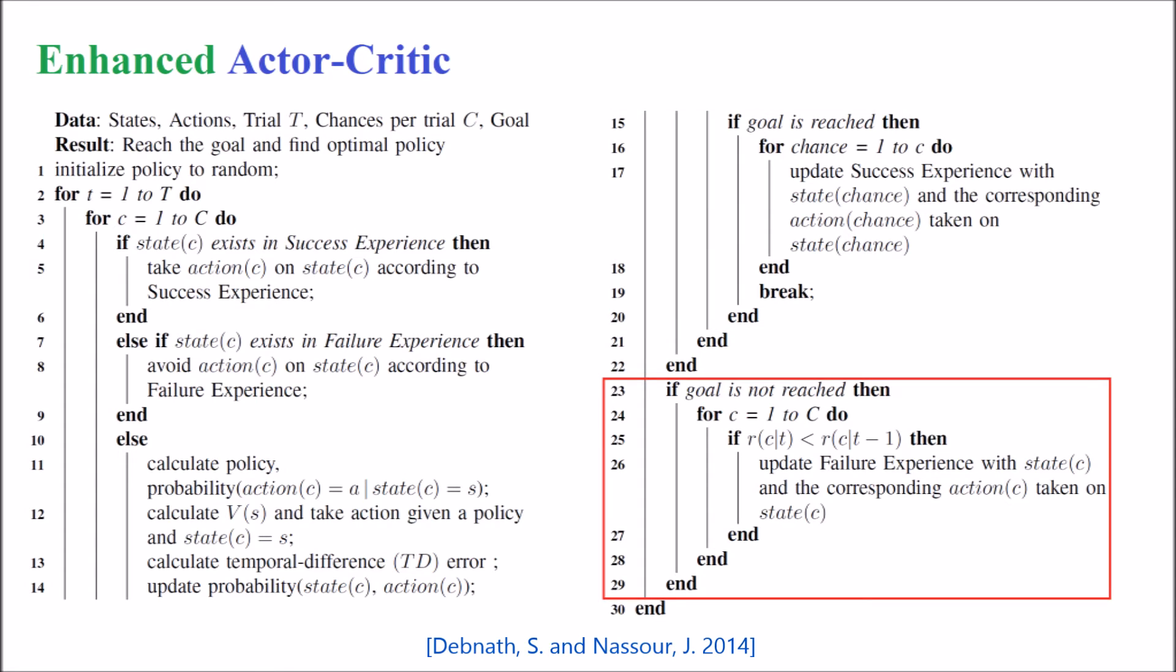While, at the end of all the chances during a trial, if the agent fails to reach the goal, then it compares the reward it receives at the present state with the one in the previous state. If the immediate reward received by taking an action at a state during chance of a trial is less than that during chance of a previous trial, then it suggests that the action taken at a state during chance might not possibly be the right one and hence the state-action pair will be updated to the failure experience.